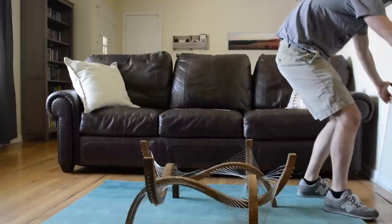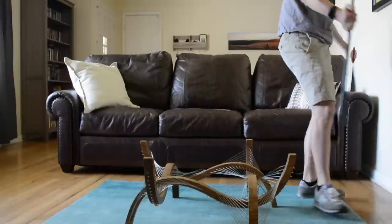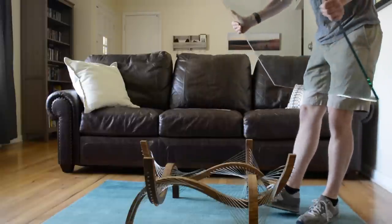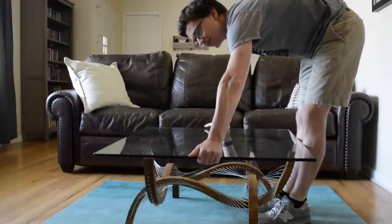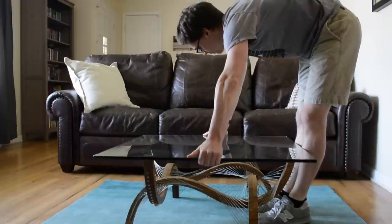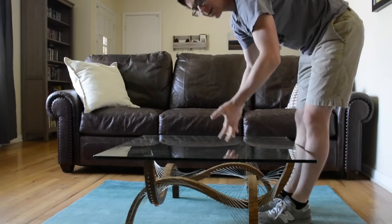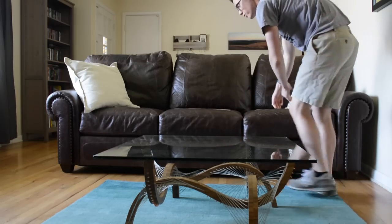This sheet of glass is pretty heavy. It weighs in at about 60 pounds. But you'll notice as I put it down here that the base doesn't really give at all. That's because you have all these cables just working together to create something really stable. So now with the glass on top the table is completely done. I hope you learned a little bit from watching this about my process and how I build and design tension-based sculptures and furniture. Thanks for watching.